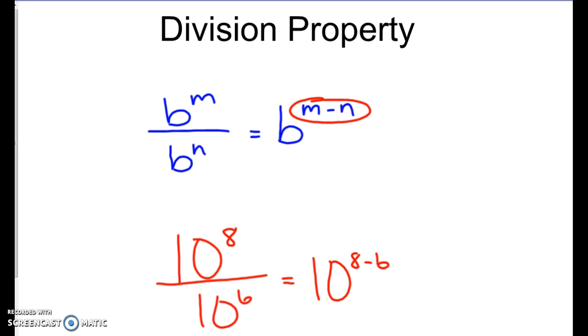It always goes numerator minus denominator. So 8 minus 6, we end up with 2. So 10 to the second would be this simplified.